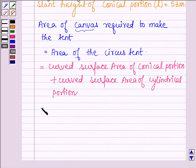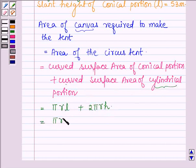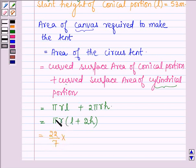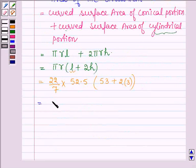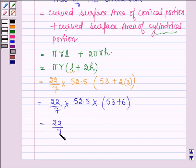The curved surface area of the conical portion is given by π × r × l, and the curved surface area of the cylindrical portion is 2πrh. Taking π and r common, we get π × r × (l + 2h). Substituting values with π = 22/7, r = 52.5 meters, l = 53 meters (slant height), and h = 3 meters: this equals 22/7 × 52.5 × (53 + 6) = 22/7 × 52.5 × 59.